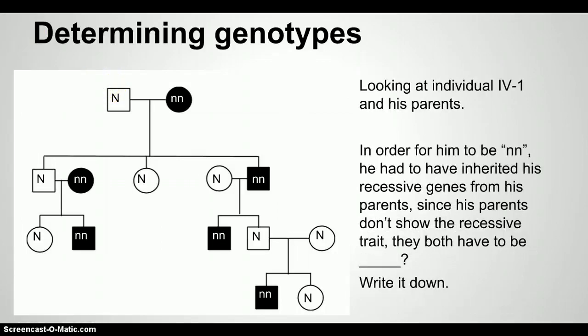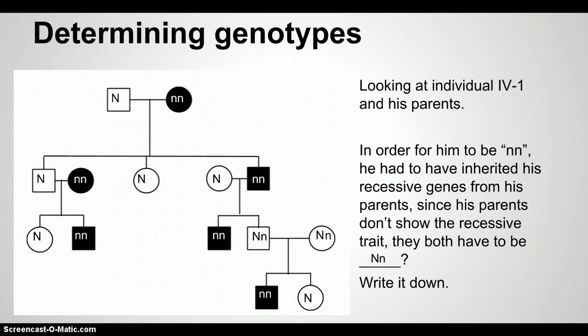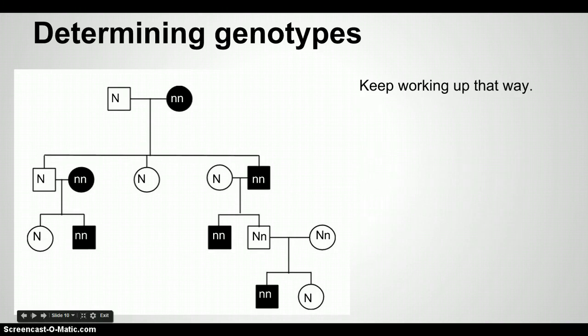I tell the students to locate individual 4-1 and ask what is the only possible genotype for the parents that would give him two copies of the recessive allele. We then keep working up, asking the same sort of question.